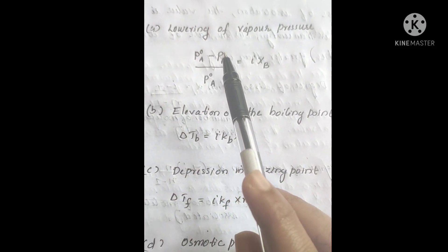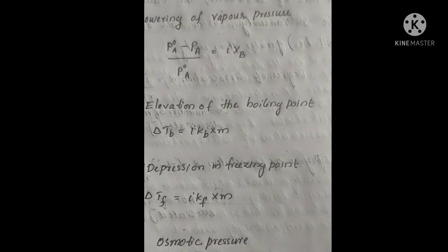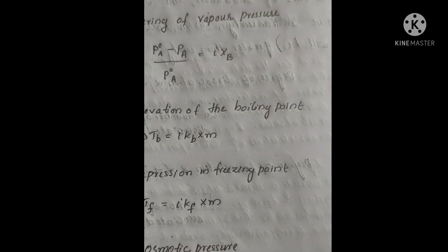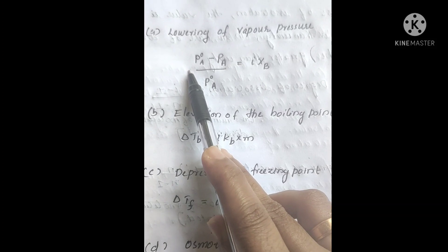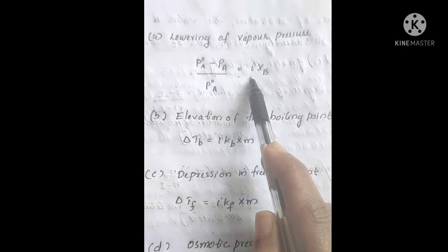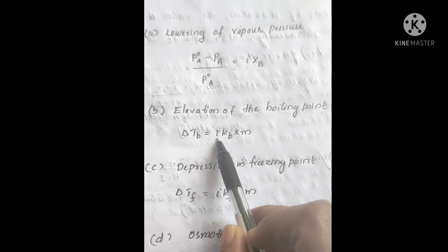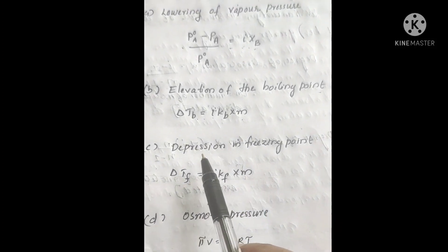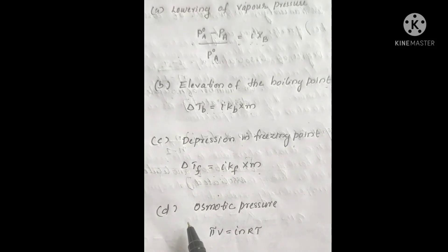Van't Hoff modified the equations for all the colligative properties in case association or dissociation is to be considered. Lowering of vapor pressure: the modified equation is P0A minus PA divided by P0 equals i into XB. Elevation of the boiling point: delta Tb equals i Kb into M. Depression in freezing point: delta Tf equals i Kf into M. And the modified equation for osmotic pressure is pi V equals i nRT.